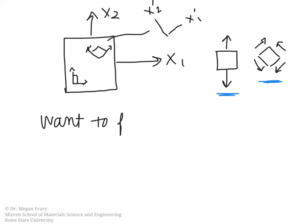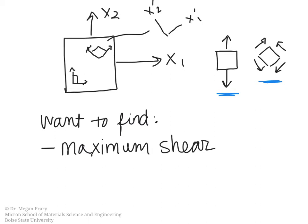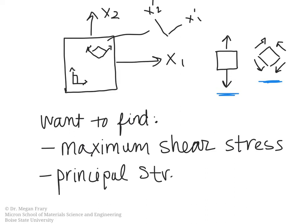So we want to be able to find, for example, where is the maximum shear stress. This will be important when we start considering plastic deformation and dislocation movement. We also want to be able to find where are the principal stresses. The principal stresses is the stress state where there is no shear. Mohr's circle is a graphical representation which lets us do this. Let's take a look at how that would work.